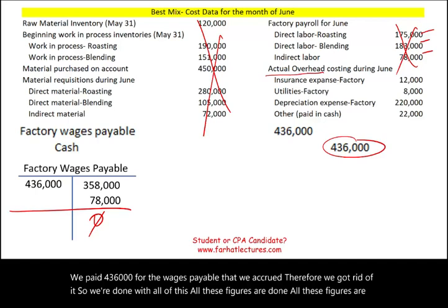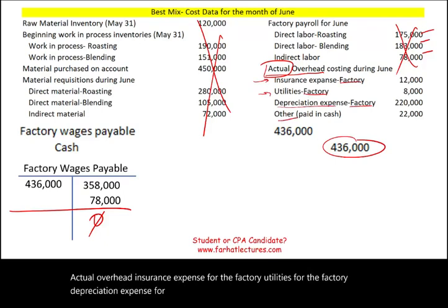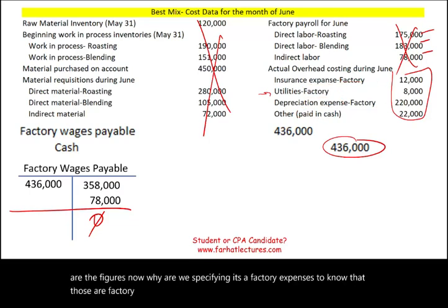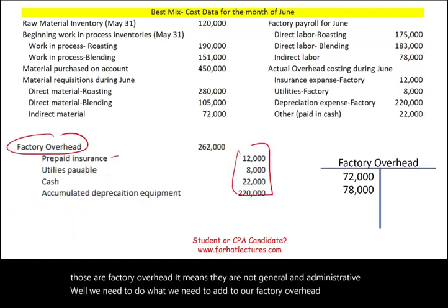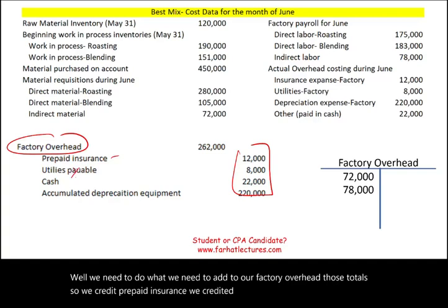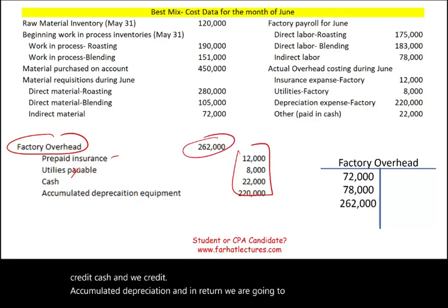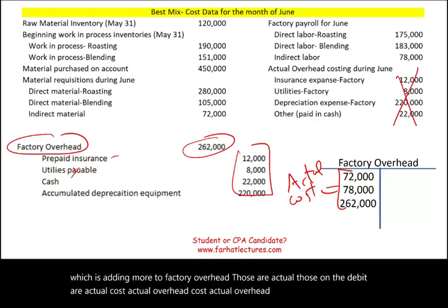Now we look at actual overhead incurred during June: insurance expense for the factory, utilities for the factory, depreciation expense for the factory, and other expenses paid in cash. These are specified as factory expenses — not general and administrative — so they all go to factory overhead. We credit prepaid insurance, utilities payable, cash, and accumulated depreciation, and debit factory overhead for the total, adding more actual costs to that account.